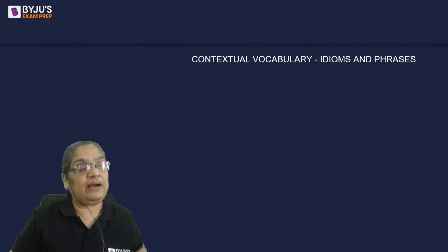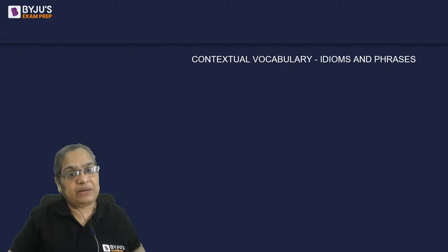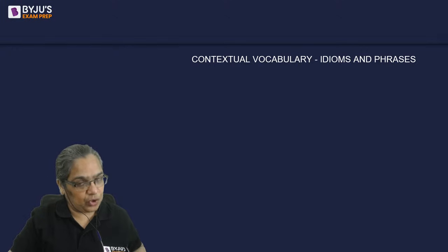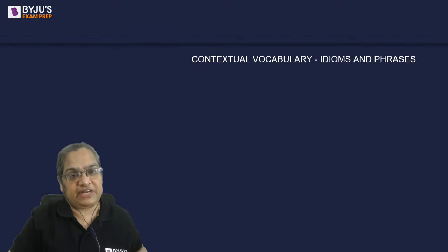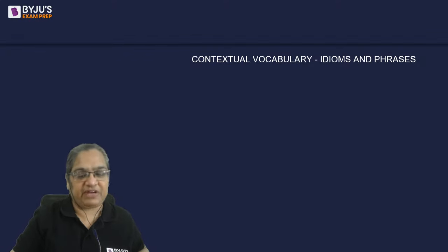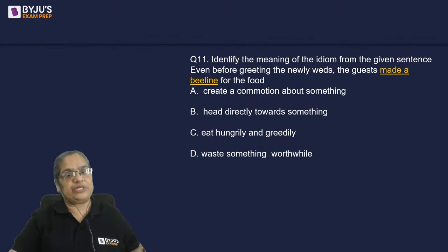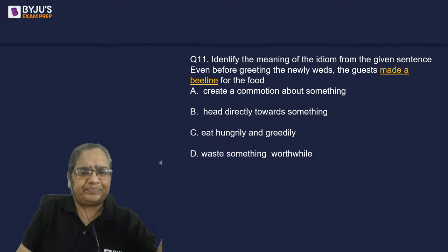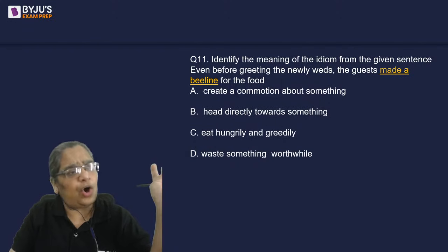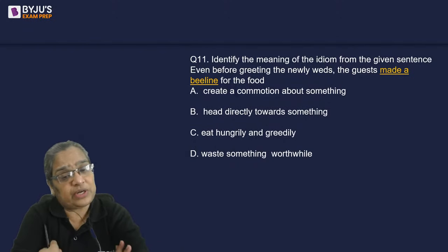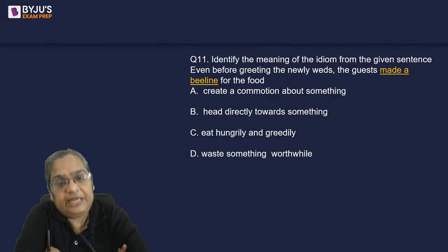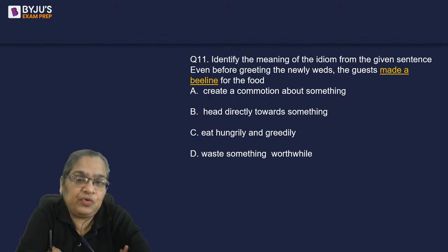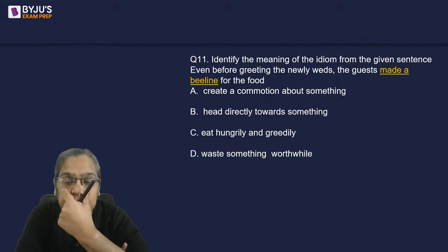Now we move to contextual vocabulary — a sentence will be given with an idiom or phrase, and you have to understand its meaning in context. Exams like TISSNET, Maharashtra CET all have contextual vocabulary; they give you idioms and phrases, sometimes as fill-in-the-blanks.